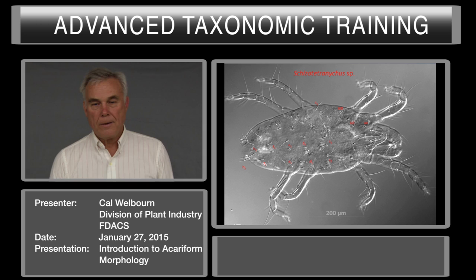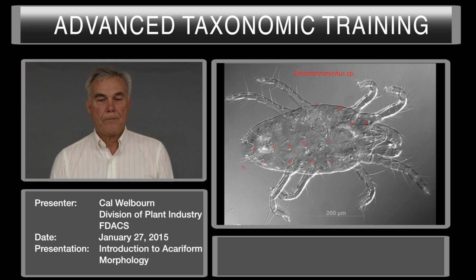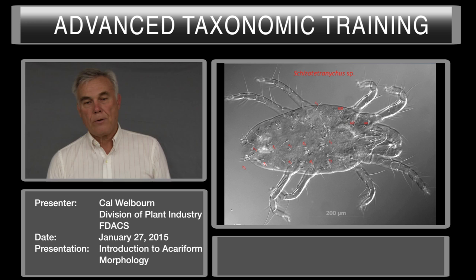Here's a whole spider mite showing where the dorsal sejugal suture would be. Most spider mites have three or four pairs of prodorsal setae—in this example three pairs. The C1 row, D1 row, E1 row, F, and H-setae are visible. Counting laterally: C1, C2, C3, D1, D2, E1, E2, F1, F2. In the prodorsal region, three pairs of prodorsal setae. The gnathosoma and palps are also labeled.